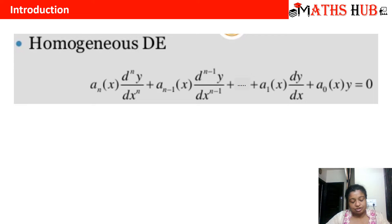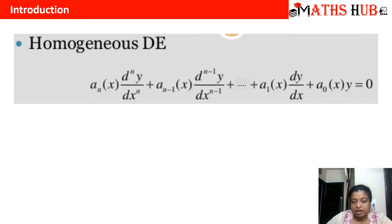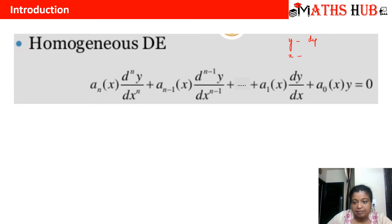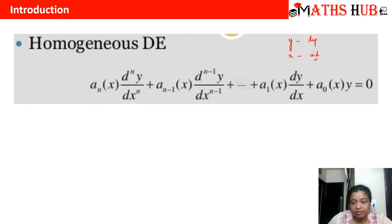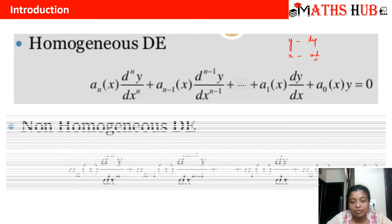You should know the difference between a homogeneous differential equation and a non-homogeneous differential equation. When we write a differential equation of order n, if we rearrange the terms and cannot shift any term depending on the independent variable x to the right-hand side, that equation is called a homogeneous differential equation. Every term — a₀, a₁, through aₙ — is a constant multiplying y, so nothing depends purely on x.